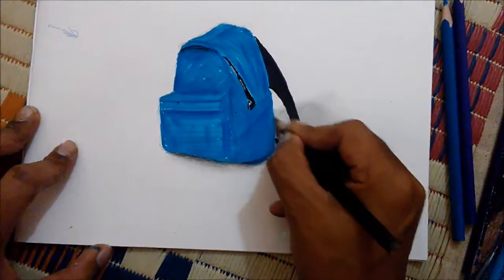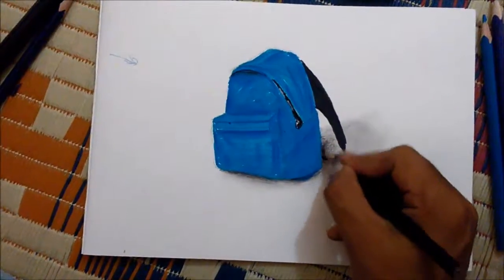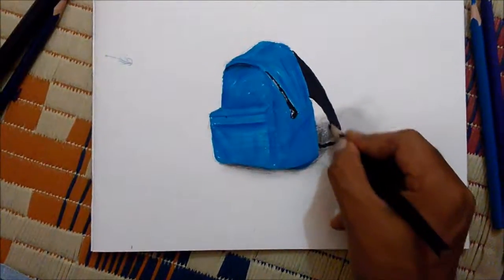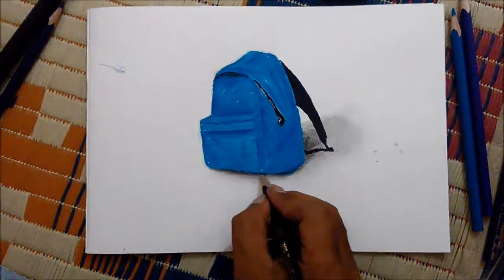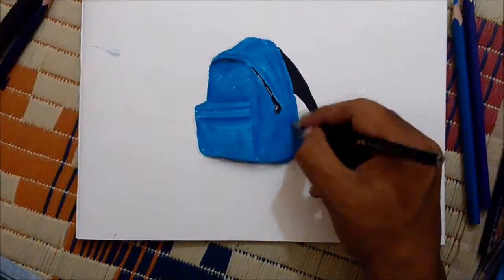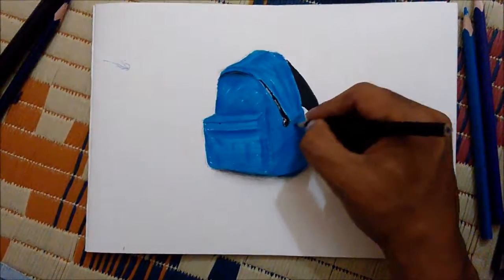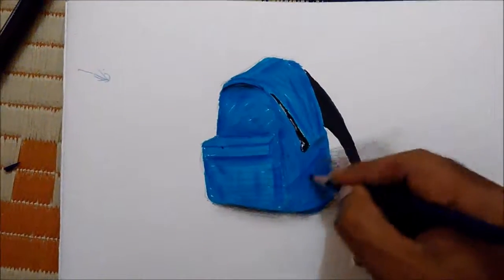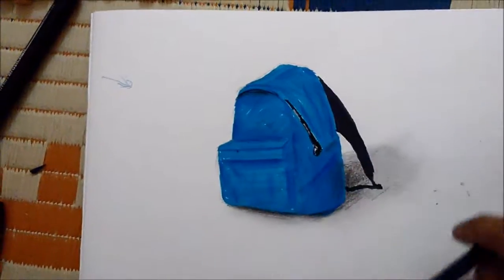Now use your dark color pencil for the shadow. Now if you have a color wheel is better. Okay, done. Now use some shadow details in this side with your black color.